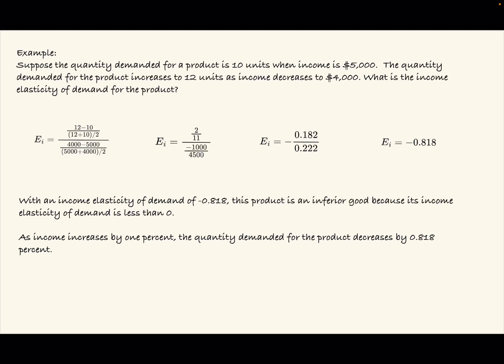Here we need to use our midpoint formula. So we have EI, or income elasticity of demand, equals 12 minus 10, over 12 plus 10, divided by 2, all over 4,000 minus 5,000, over 5,000 plus 4,000, over 2.